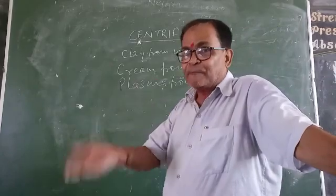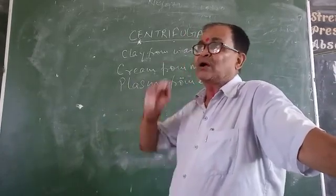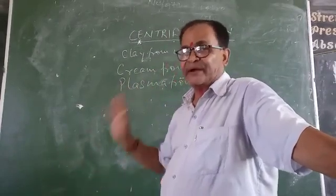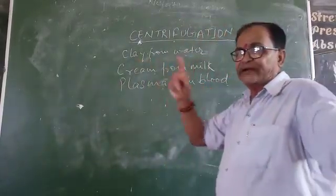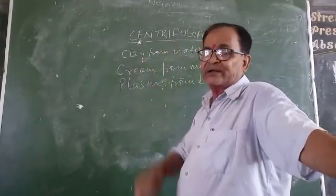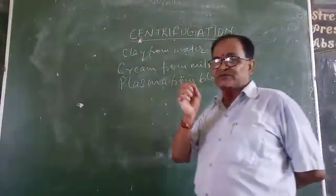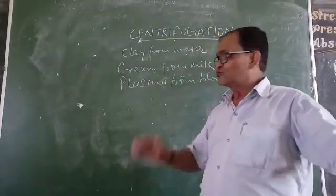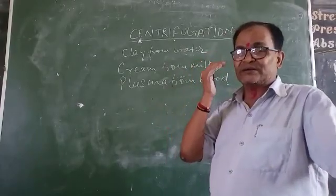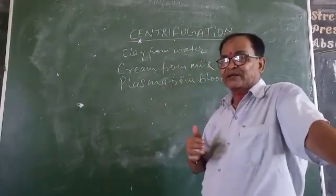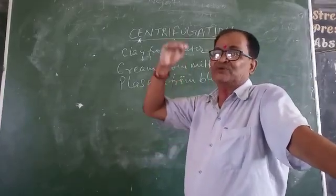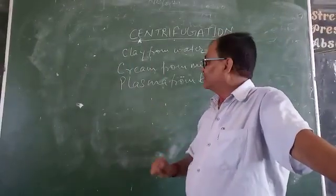The lighter components come up and are separated. For example, when we rotate muddy water with the help of a centrifuge, clay particles — being heavier than water — settle down, and clear water comes up.